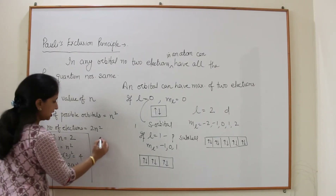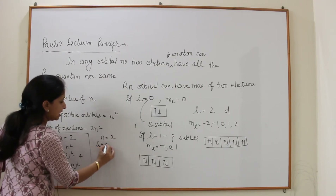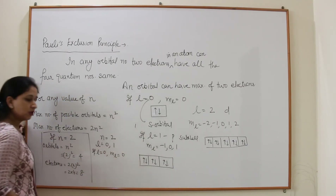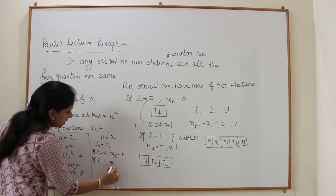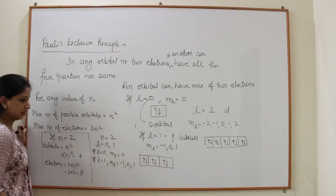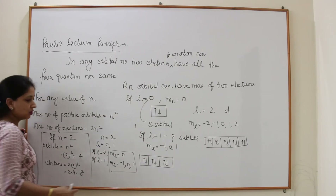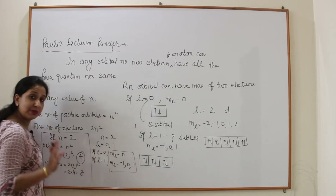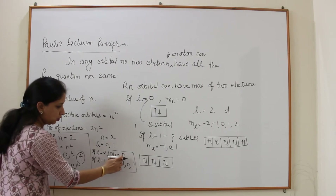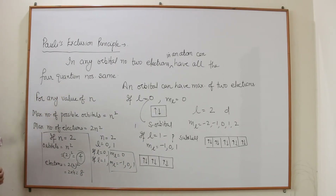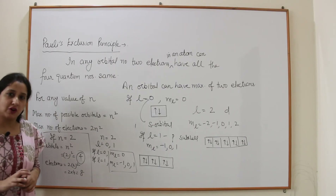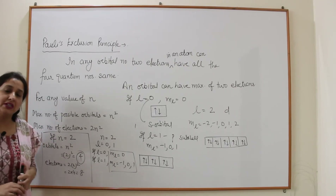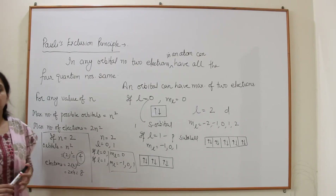Let's apply the formula for N=2. L values are 0 and 1. If L=0, ML=0. If L=1, ML = −1, 0, +1. Counting ML values gives 4 orbitals. Each orbital has 2 electrons: 2, 4, 6, 8 — so 8 electrons total. This confirms: number of orbitals = n² and number of electrons = 2n².